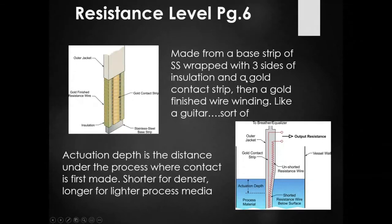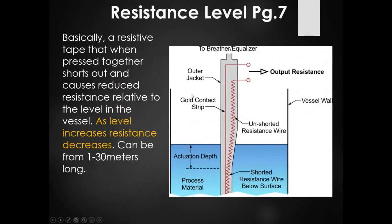The resistance tape is made from a stainless steel base strip wrapped with three sides of insulation, a gold contact strip, and gold-finished wire winding around it — like a guitar, sort of. As the tape is pressed together, it shorts out, causing a reduced resistance relative to the level in the vessel. As level increases, resistance decreases because we're shortening the length of wire. These can be from one to 30 meters long — which is why a silo is a good application.